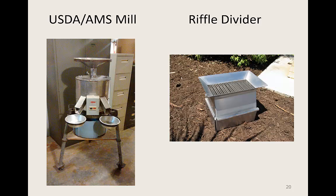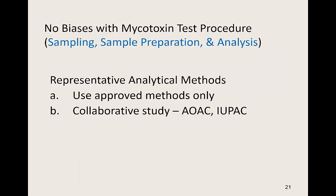To comminute the laboratory sample, an AMS mill, such as the one shown on the left, is a good solution. This mill provides two subsamples automatically, and these subsamples are truly representative of the laboratory sample. If a mill is used that does not automatically provide subsamples, the comminuted laboratory sample may be divided using a riffle divider to get the test portion. Once the test portion is obtained, use a representative analytical method to process, extract, and measure the mycotoxin in the test portion.